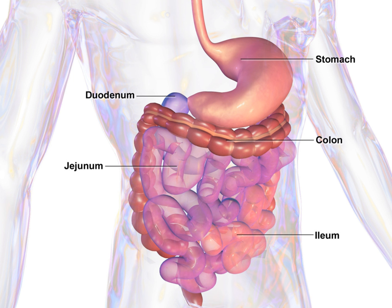The small intestine begins at the duodenum and is a tubular structure, usually between 6 and 7 meters long. Its mucosal area in an adult human is about 30 square meters. Its main function is to absorb the products of digestion including carbohydrates, proteins, lipids, and vitamins into the bloodstream. There are three major divisions. The duodenum is a short structure about 20–25 centimeters long which receives chyme from the stomach, together with pancreatic juice containing digestive enzymes and bile from the gall bladder.